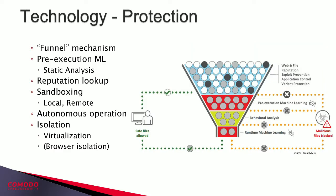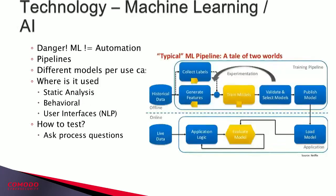From prevention we move into protection, which is about controlling or understanding what a binary is going to do. This is where machine learning has really come into its own — analyzing static features. We can put the binary into a local or remote sandbox. There's also been interest around virtualization or containment of actions the binary is going to be able to take. Machine learning is, of course, one of the buzzwords in our industry.